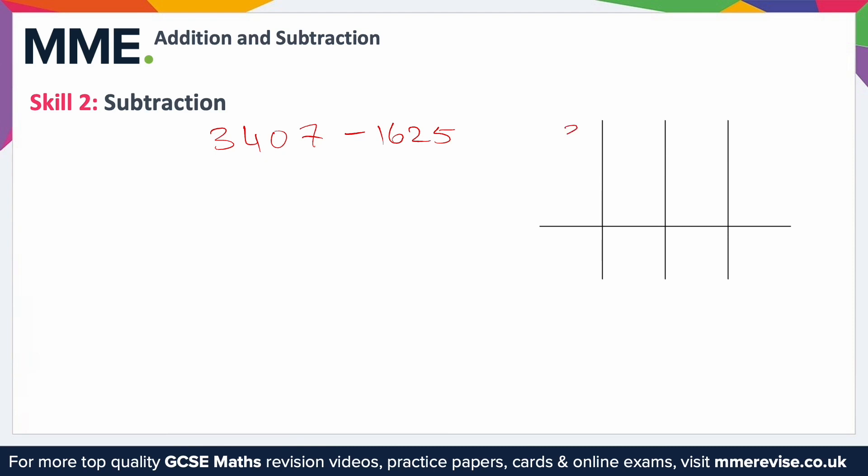Again, we don't need the vertical lines, but it shows nicely how we're separating the individual digits. So like that, and again I'll add a little subtraction sign there. You need to always make sure the number you're subtracting from—so in this case we're subtracting 1625 from 3407—is on top.